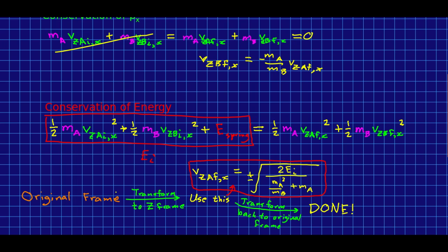Here is your strategy to solve this nasty problem. You take your original frame, you transform all the velocities into the Z frame. You have to calculate your initial energy in the Z frame. Careful, use velocities in the Z frame, and then you just use this and you transform back to the original frame and you're done.